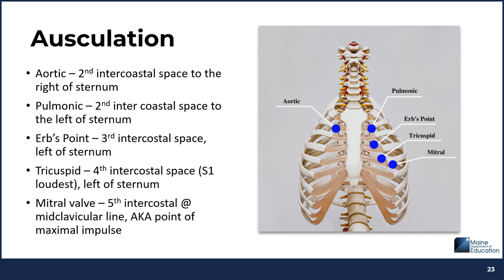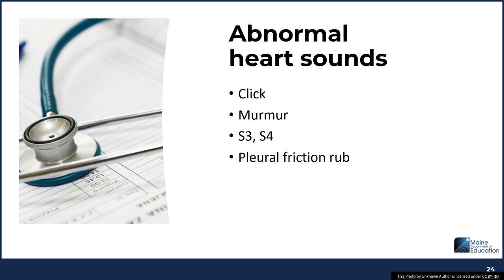During assessment you may notice abnormal heart sounds, which can be heard with congenital heart diseases, arrhythmias, or valve dysfunction. A clicking sound can come from a valve that is flapping or snapping when it closes. A murmur is caused by rapid, choppy blood flow through the heart — some murmurs are innocent and require no treatment, while others can indicate a serious heart condition. S3 and S4 are abnormal heart sounds that may indicate heart failure during the diastolic period. A pleural friction rub is another abnormal heart sound that may be heard in a student feeling chest pain.